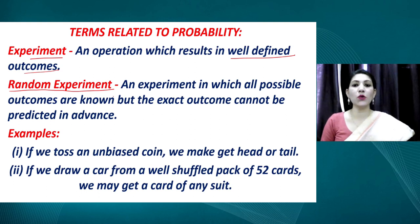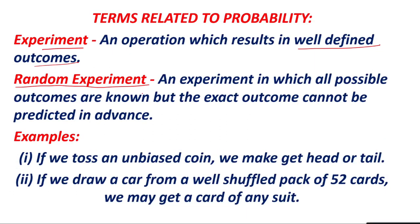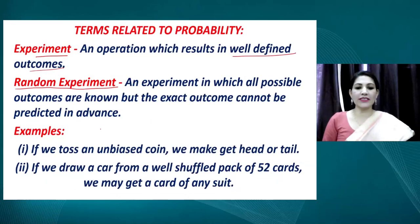When we roll a die, the outcome could be 1, 2, 3, 4, 5, or 6, and we do not know which face will show on top. Similarly, if there are black and red balls in a bag, and we draw without looking, we do not know which color will come out. These types of experiments are known as random experiments.